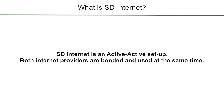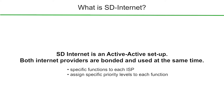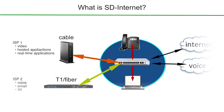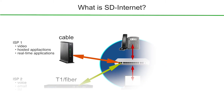With proper execution, your SD service provider is going to use the SD Internet firewall to assign specific functions for each ISP, assign specific priority levels to each application or function, and install instructions for failover or load balancing between the two ISPs. With ISP1, which is our cable example, we're assigning video, hosted applications, and any real-time applications to that provider, because in this case we are assuming we have more bandwidth available and those applications need more bandwidth in order to work properly.